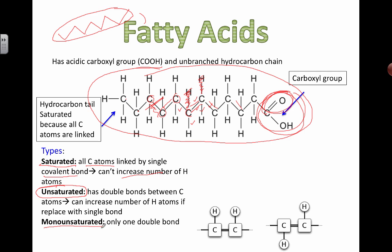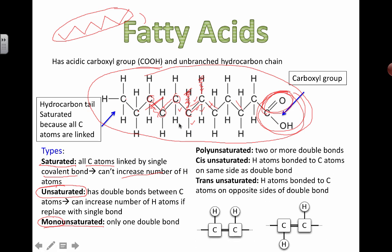Monounsaturated means only one double bond. That makes sense because mono means one. So monounsaturated means one double bond in the fatty acid. And then obviously polyunsaturated means that there can be two or more double bonds. And so we're going to see some examples a little bit later, but hopefully you can already start to picture them. We're almost done with categorizing fatty acids.